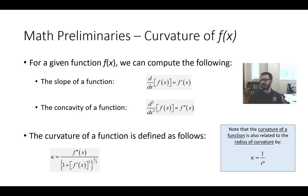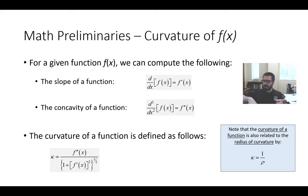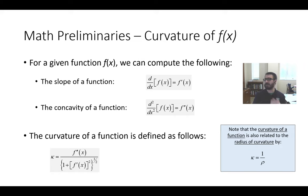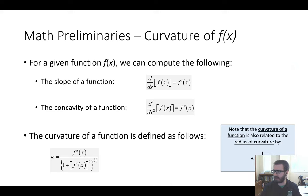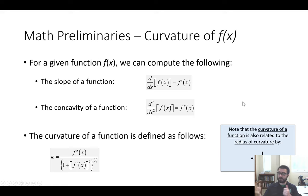So we have slope from the first derivative, concavity from the second derivative, and curvature as that full expression. Note that we use Greek letter kappa for curvature, and we can relate it to the radius of curvature rho by inversion. Now we can start talking about beam deflection.